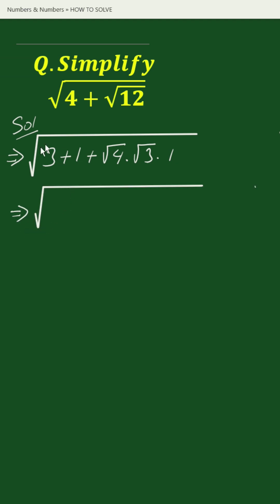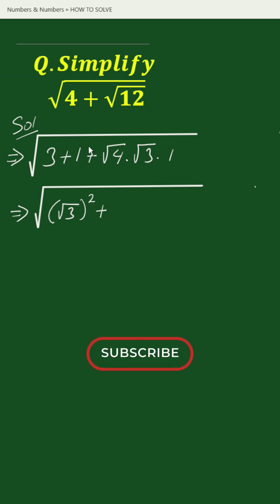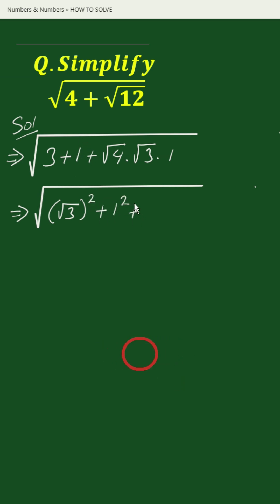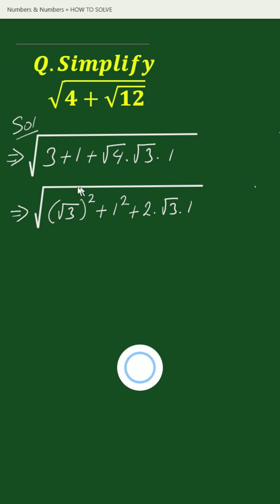Now, 3 can be written as (√3)², and 1 can be written as 1². Square root of 4 is 2, giving us 2 times square root of 3 times 1. Now this is of the form...